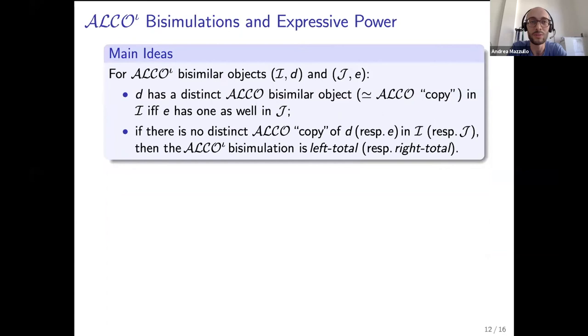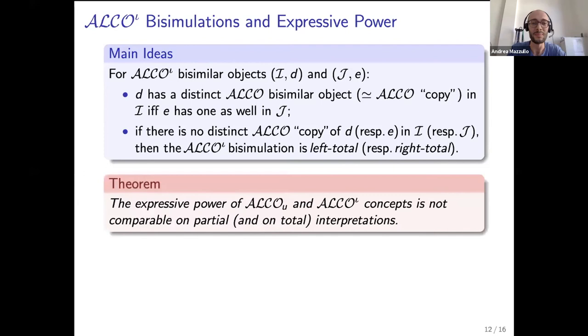We've studied the expressive power of ALCO iota by introducing a suitable notion of bisimulation. Two ALCO iota bisimilar objects D in I and E in J are such that D has a distinct ALCO bisimilar object in I if and only if E has one in J. Moreover, if there is no distinct ALCO copy of D in I, then the ALCO iota simulation relation is left total, meaning the relation coincides with the domain of I, and symmetrically for E and right totality.